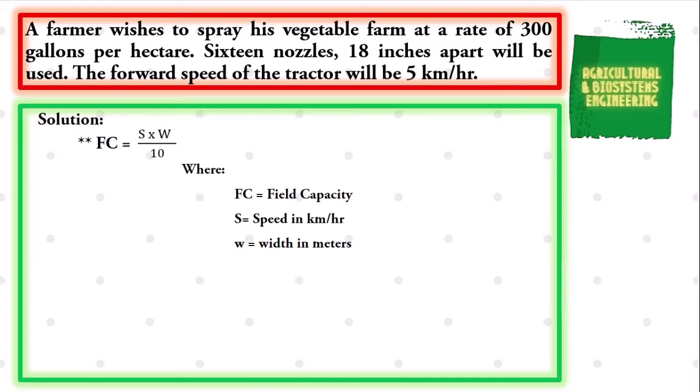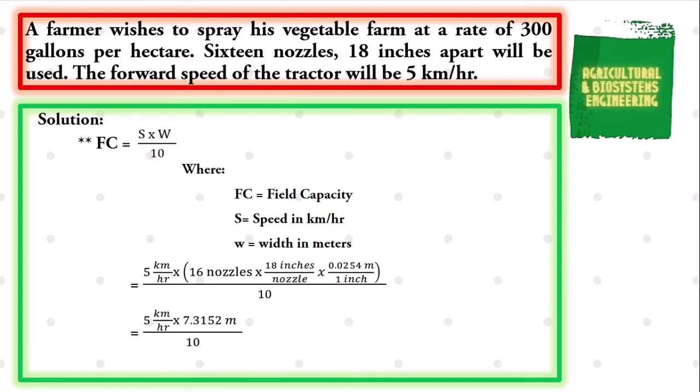We already have the values needed in the equation so simply substitute. Giving S, speed of 5 kilometers per hour, multiplied to the width. The width can be obtained by multiplying the number of nozzles to the nozzle spacing, which is 16 nozzle times 18 inches per nozzle. We have to convert inches to meter using the conversion factor 1 inch equals 0.0254 meters, all over 10. We simply solve and we have the speed of 5 kilometers per hour times the width of 7.3152 meters all over 10. We have a final value for our field capacity to be 3.6576 hectare per hour.